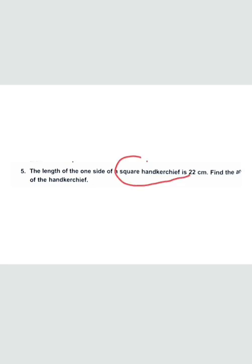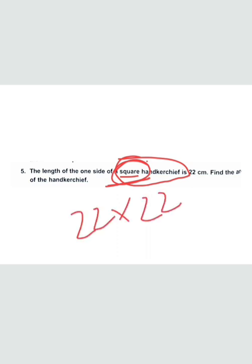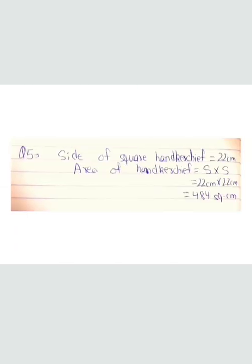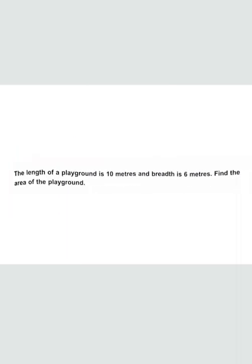Question number five: the length of one side of a square handkerchief — a handkerchief is square-shaped. Find the area. Area of a square is side multiplied by side: 22 × 22 = 484 square centimeters. Side of the square is 22 centimeters, area equals side × side = 22 cm × 22 cm = 444 square centimeters.